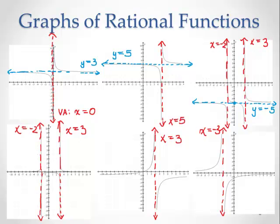For the bottom left graph, there's a horizontal asymptote at y equals 0. The next graph has a horizontal asymptote at y equals negative 1. And the last graph also appears to have a horizontal asymptote at y equals 0.